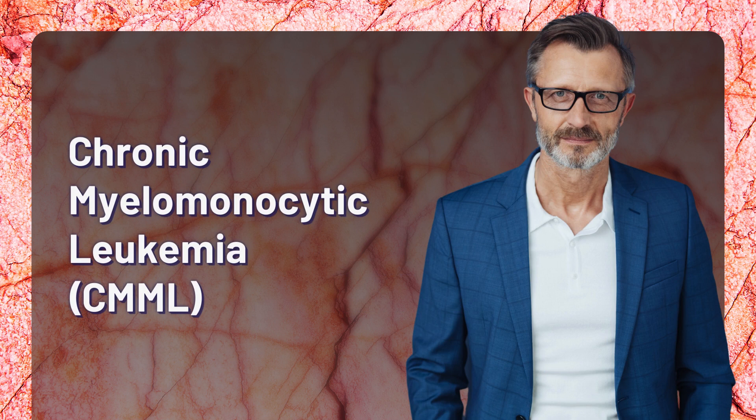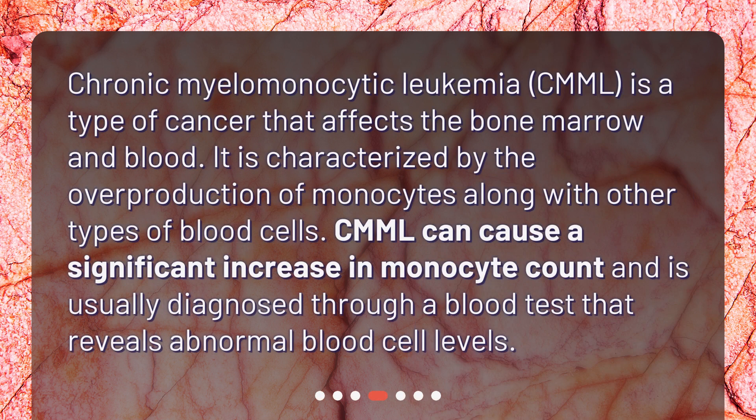Chronic myelomonocytic leukemia (CMML) is a type of cancer that affects the bone marrow and blood. It is characterized by the overproduction of monocytes along with other types of blood cells. CMML can cause a significant increase in monocyte count and is usually diagnosed through a blood test that reveals abnormal blood cell levels.